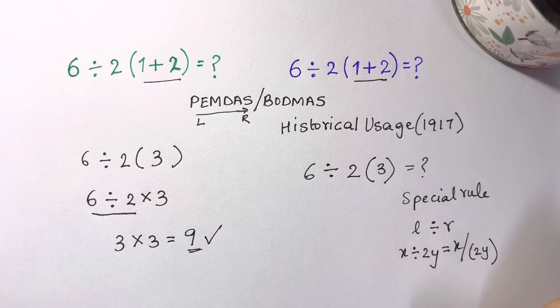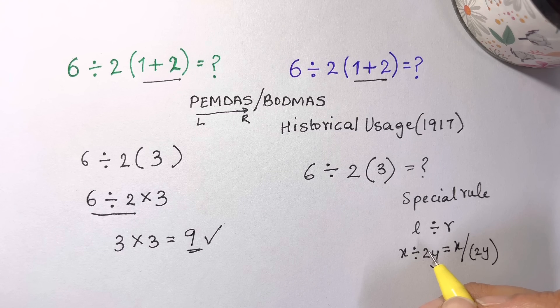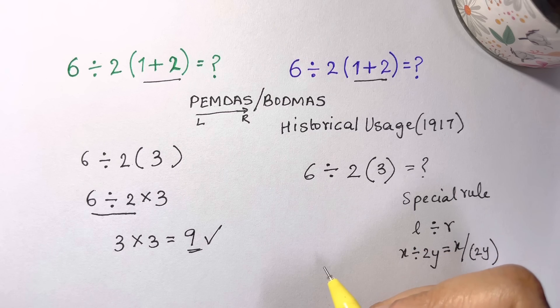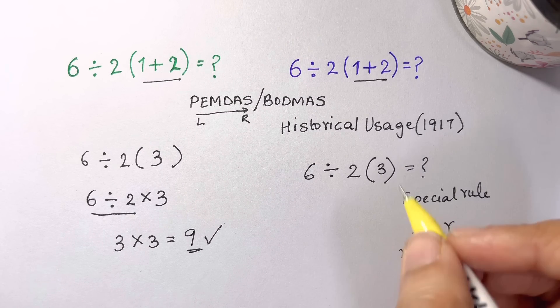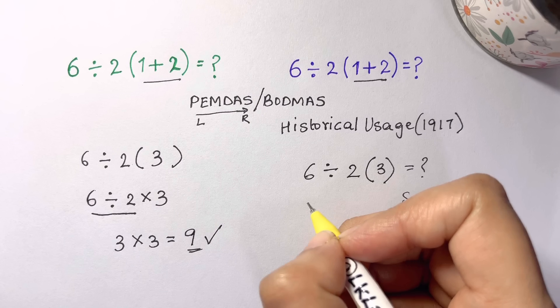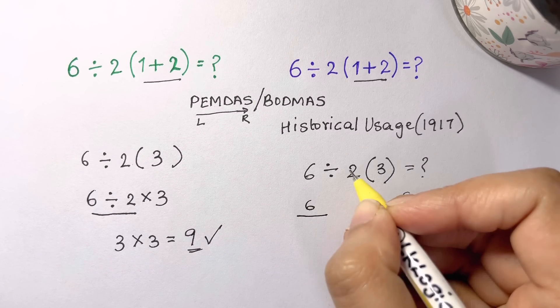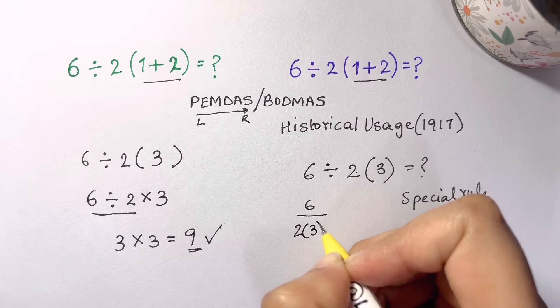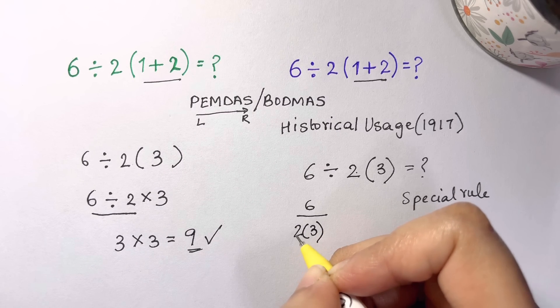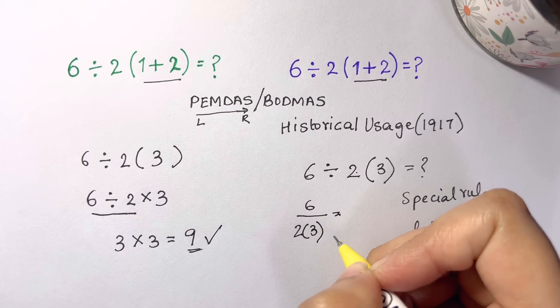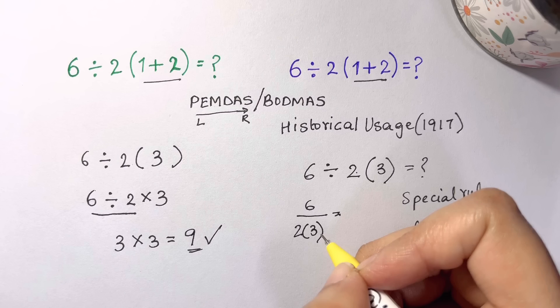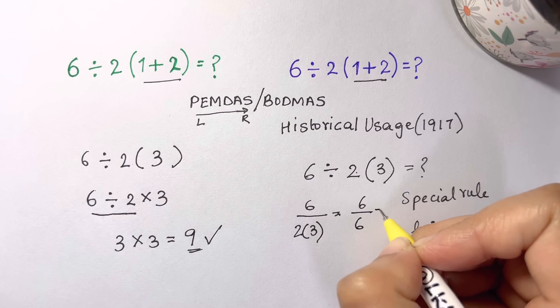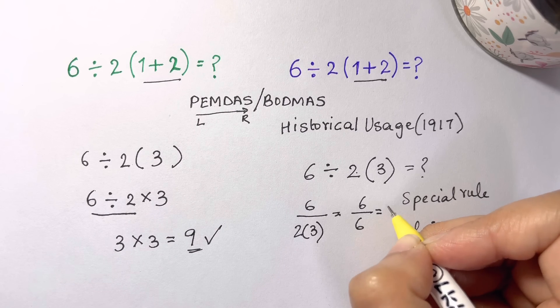So under this special usage, which is an exception to the order of operations and we don't use it anymore, applying this rule what happens is you have 6 divided by 2 multiplied by 3 as the product of complete denominator, which is equal to 6 divided by 2 times 3, which is equal to 6 divided by 6, which is equal to 1.